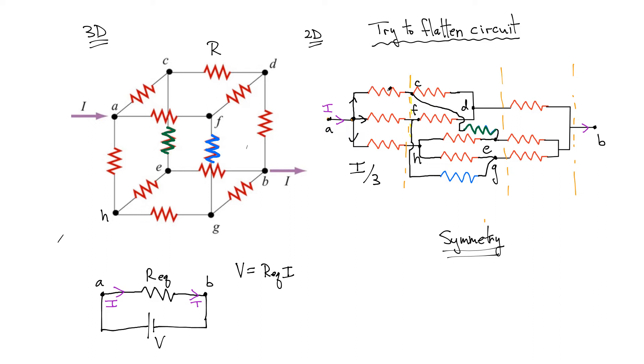Now, each one, or the current I over 3, then reaches a junction and branches off into two segments. That means the current I over 3 is then going to split evenly into two segments. So, that means each of these six branches is going to have a current I over 6 flowing through it.